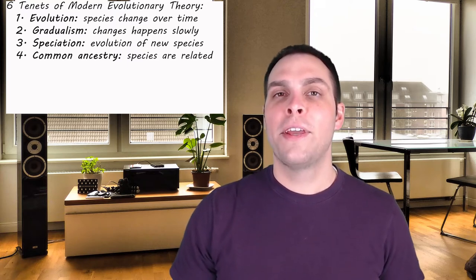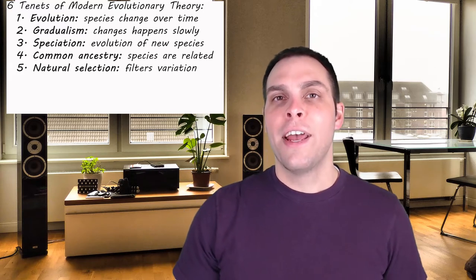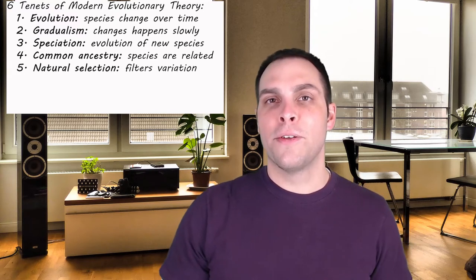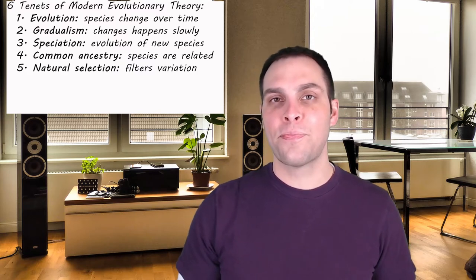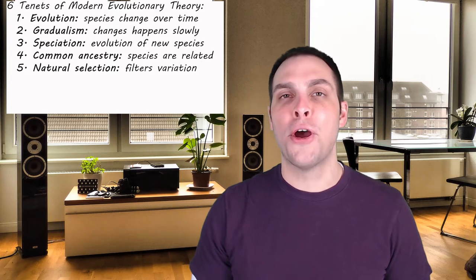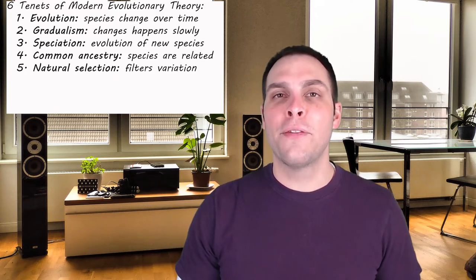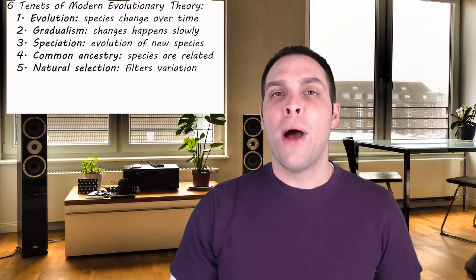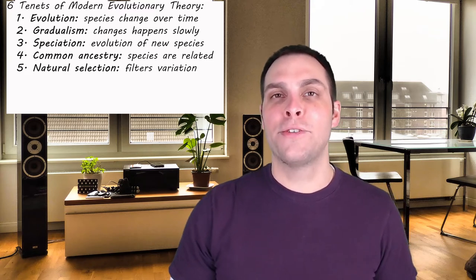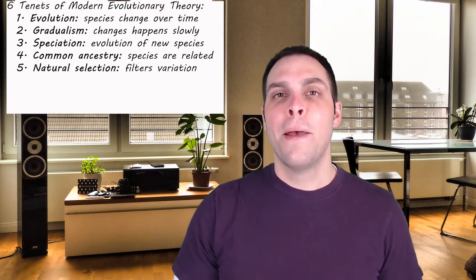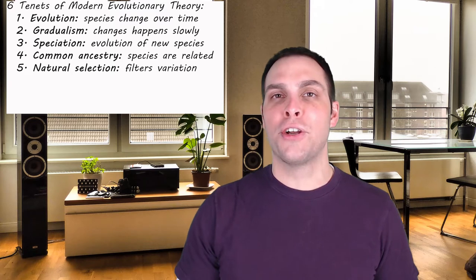The fifth key tenet of Neo-Darwinism is natural selection. And this is the thing that is also the most controversial and revolutionary about Neo-Darwinism. It's the mechanism by which evolutionary change occurs. Until Darwin proposed his theory of evolution we really didn't know how evolution occurred. A lot of people understood that species do change over time.